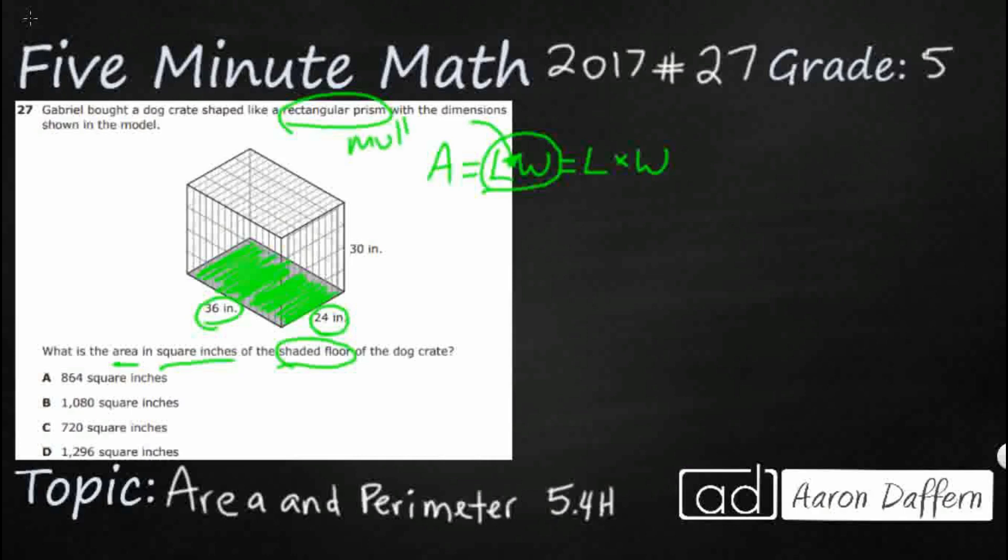So multiplication is going to be assumed from fifth grade and above when you have two letters next to each other or when you use parentheses. Sometimes we'll do this. We'll do L and then that little dot, which can work when we're dealing with letters. But if we're dealing with numbers, guess what? That looks a lot like a decimal point.